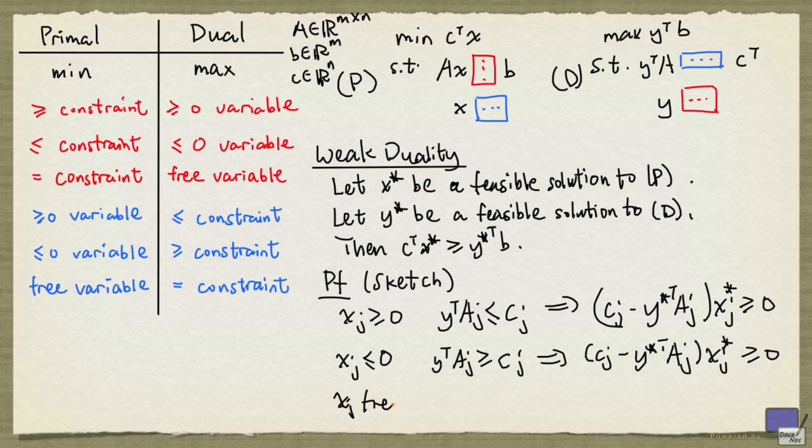And if xj is free, the corresponding dual constraint is an equality constraint. And so we have cj minus y star transpose aj times xj star equals zero, but it's certainly greater than or equal to zero.